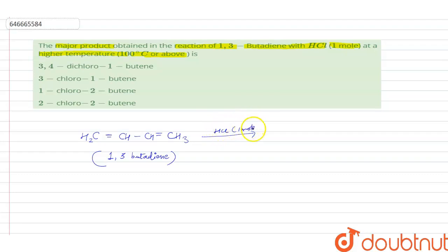So when this 1,3-butadiene reacts with HCl, remember HCl is 1 mole at high temperature 100 degree Celsius and above.